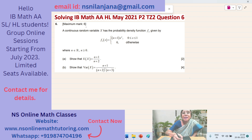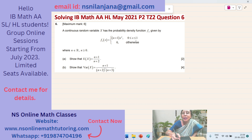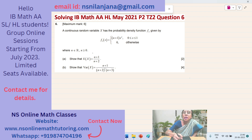The maximum mark is 6. A continuous random variable x has the probability density function f_n given by f_n(x) equal to (n+1) times x to the power of n, for x between 0 and 1 both included, and f_n(x) equal to 0 otherwise for other values of x not lying in this range. Here n is a real number with n greater than or equal to 0.